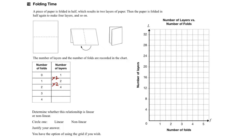After three folds, we double it and we would get four times two, or eight layers. And after four folds, we get eight times two, or sixteen layers.